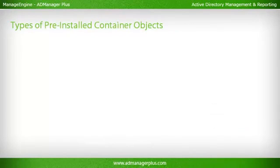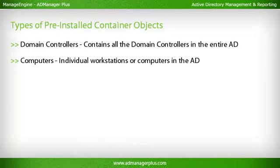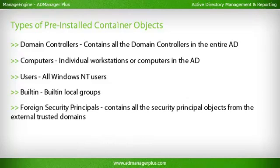Types of pre-installed container objects: Domain Controllers contains all the domain controllers in the entire AD. Computers contains individual workstations or computers in the AD. Users contains all Windows NT users. Built-in contains built-in local groups. Foreign Security Principals contains all the security principal objects from external trusted domains.